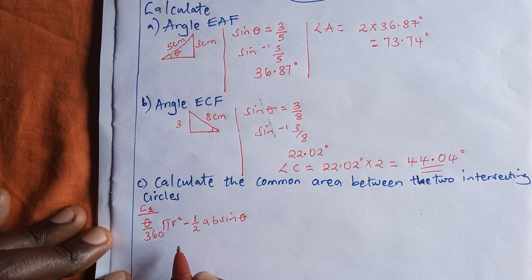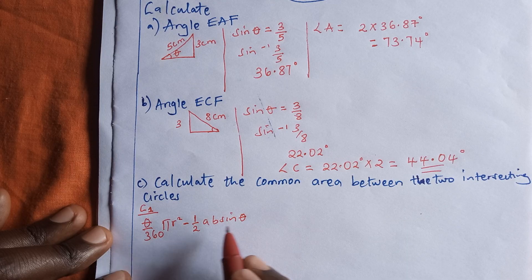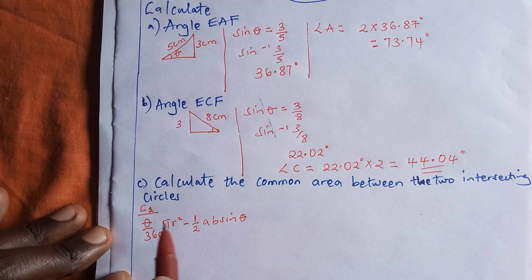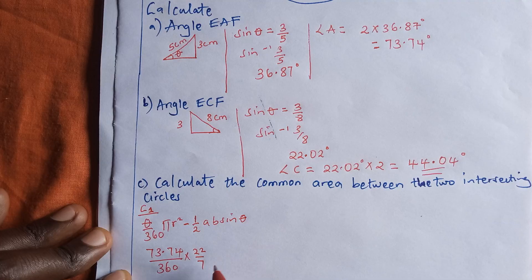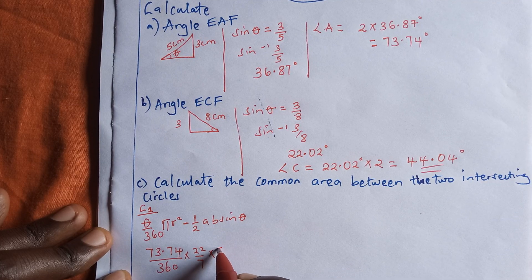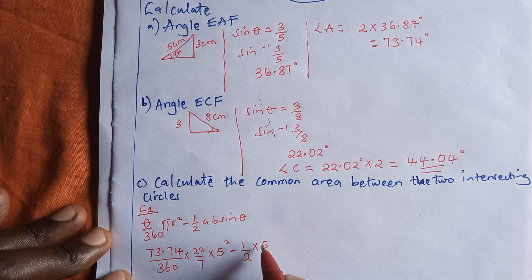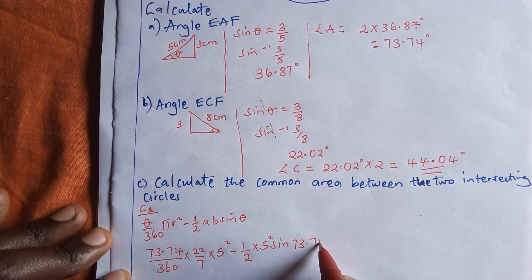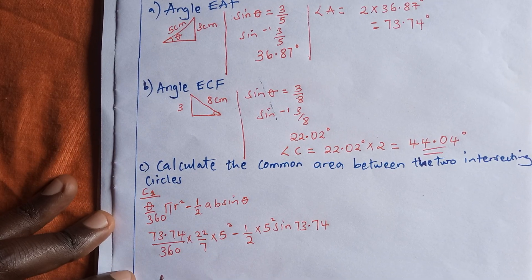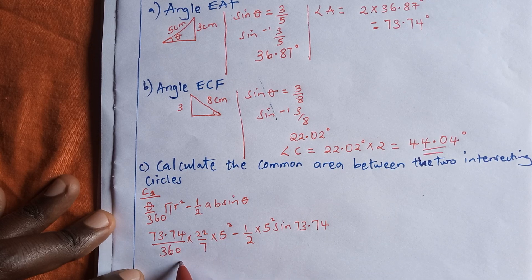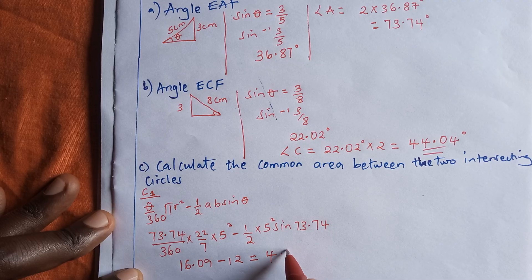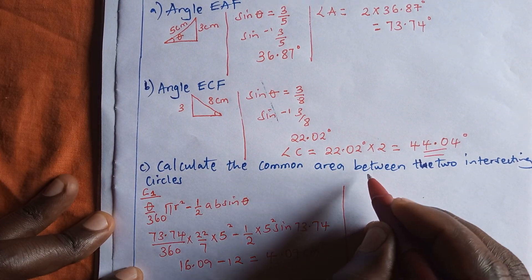For circle one, we use angle 73.74 degrees: (73.74 / 360) × (22/7) × 5² minus one half times 5² times sine 73.74. The first part gives 16.09, and subtracting 12 gives us 4.09 square centimeters for the area of circle one's segment.